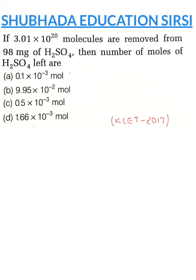98 milligram H2SO4 is a very famous molecule. H2SO4 molecular weight is 98 gram. One mole H2SO4 is 6.022×10^23 molecules. Note that it's 98 milligram, not gram, which equals 98×10^-3.